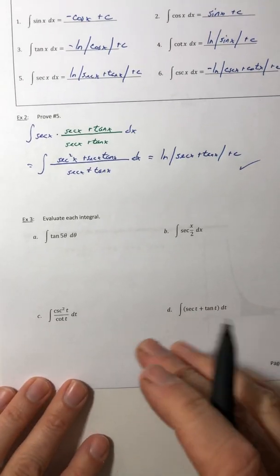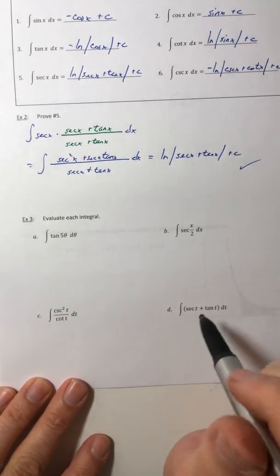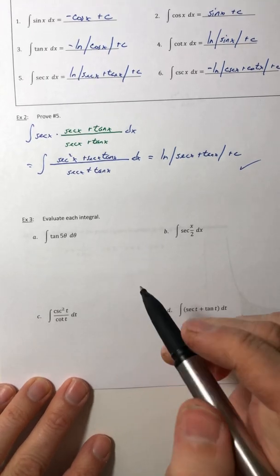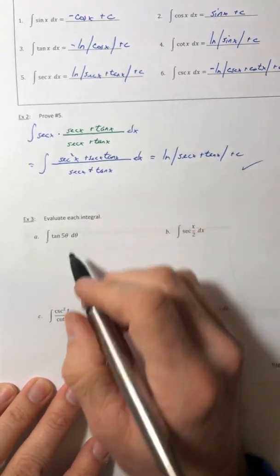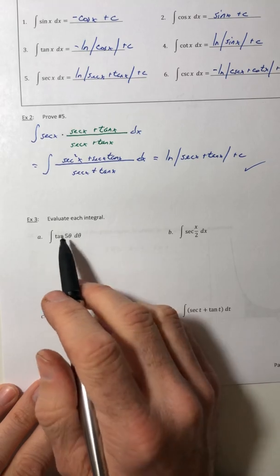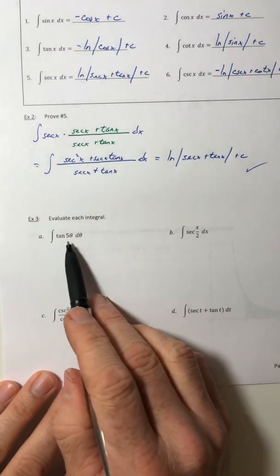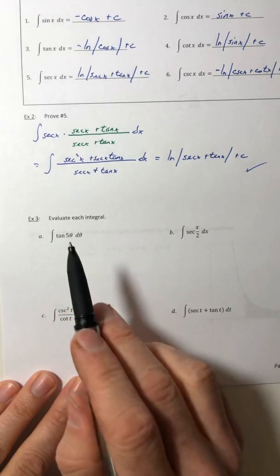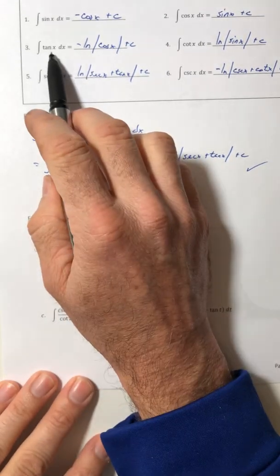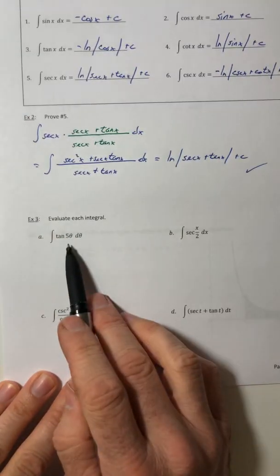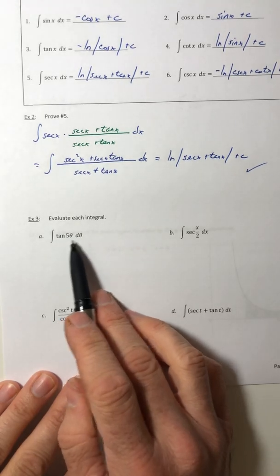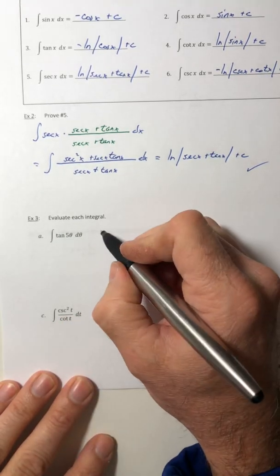Okay, so let's try some of these integrals where we have these fun trig functions. So for a, I know now what the formula for tangent is, but I don't know what it is for tangent of five theta. I want it to be just an x, or just a theta that's got a five in front of it. So let's do a u substitution.